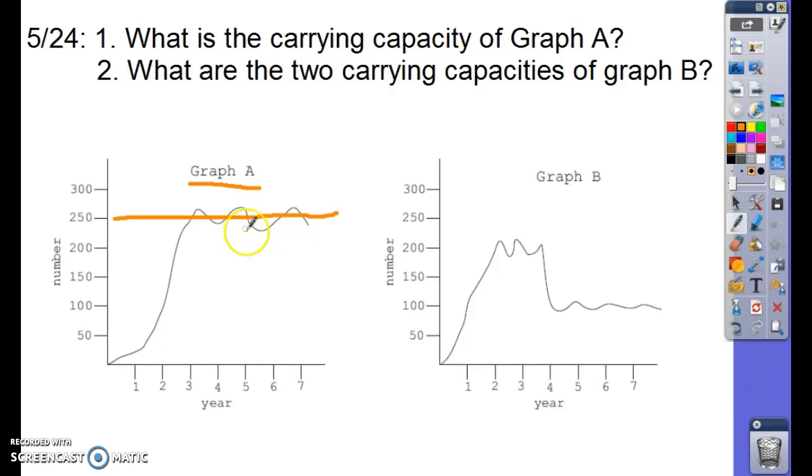Notice the population can fluctuate. Some years there might be more predators. Some years there might be fewer predators or more food. It fluctuates, but it hovers around this carrying capacity of 250.